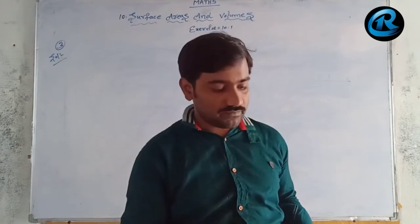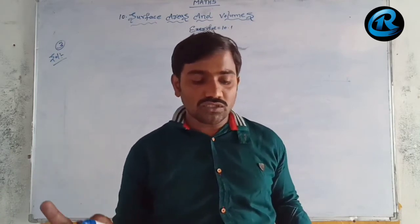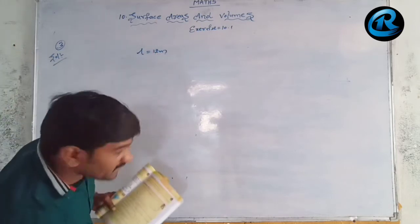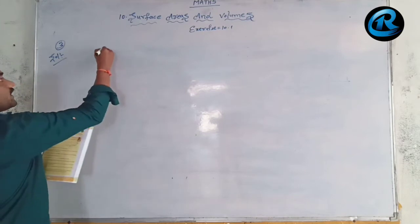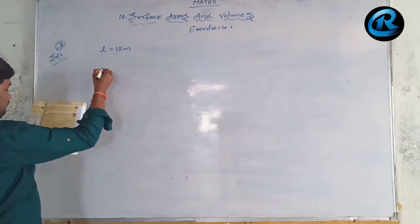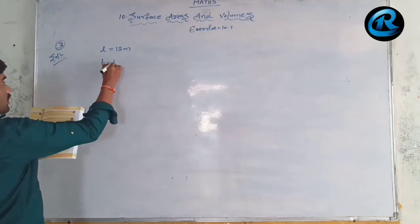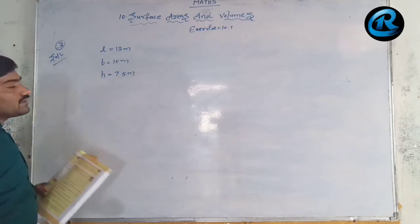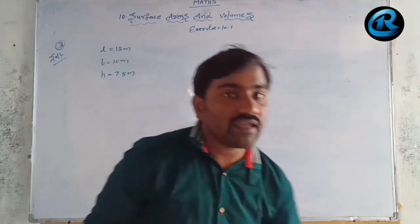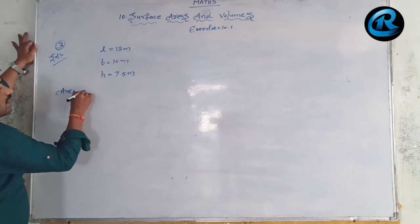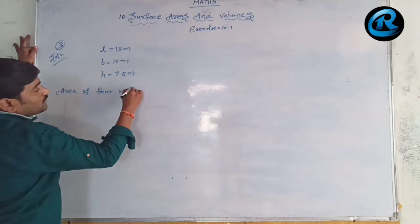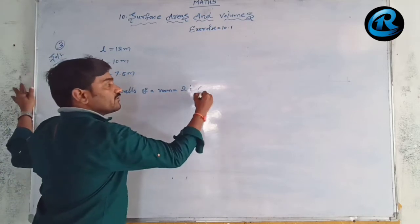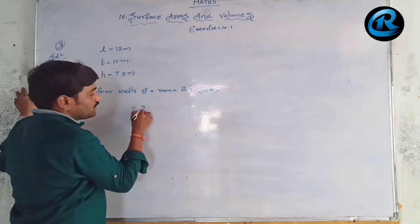Length = 12 meters, breadth = 10 meters, and height = 7.5 meters. Area of 4 walls of a room = lateral surface area of cuboid = 2h(l + b). So 2 × 7.5 × (12 + 10) = 2 × 7.5 × 22 = 15 × 22 = 330 square meters.